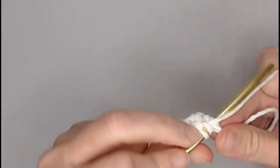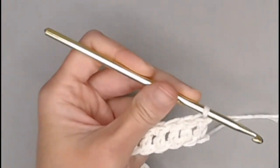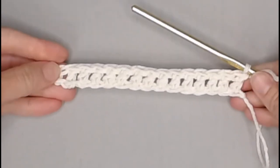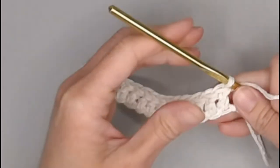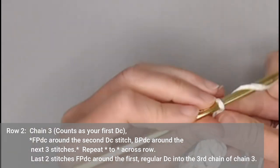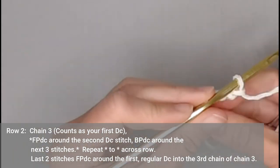Last double crochet stitch. Perfect! We have just finished row one, and this is what it'll look like. Just a bunch of double crochet stitches. To move on to row two, we will chain three. One, two, three. Turn our work.